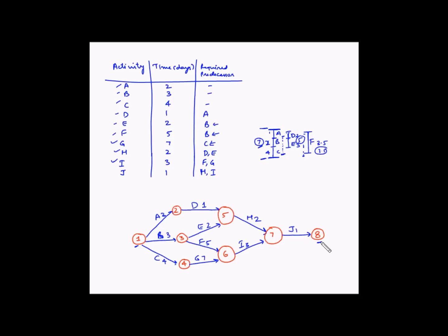While tracing a path from the first to the last node, one should always move along the direction of the arrows. In this case, since our arrows move from left to right, we determine the critical path by moving left to right. The duration of the critical path is simply the sum of the durations of all activities in that path.